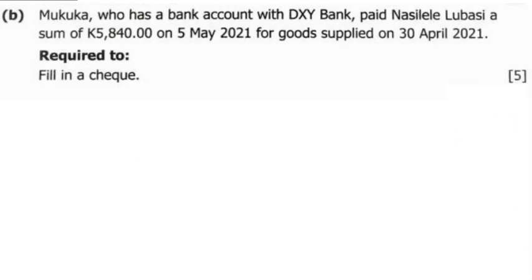Question 2B is as follows. Mukuka, who has a bank account with DXY Bank, paid Nasilele a sum of 5,840 kwacha on 5 May 2021 for goods supplied on 30 April 2021.